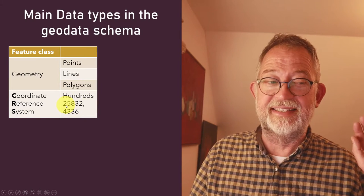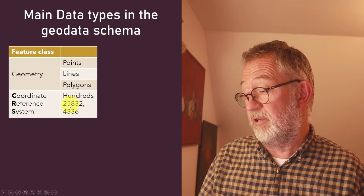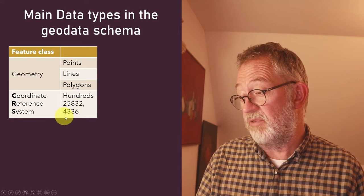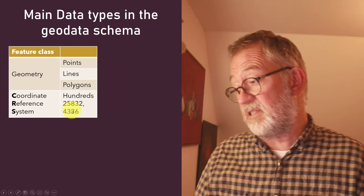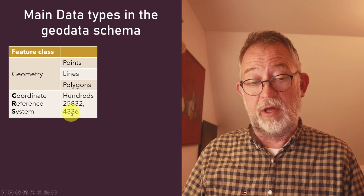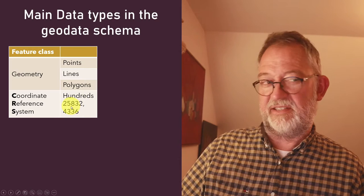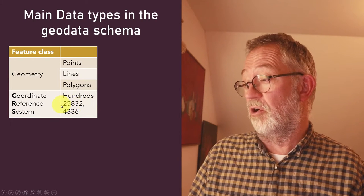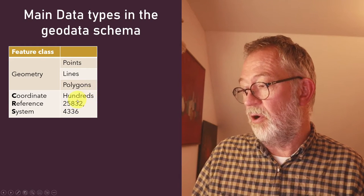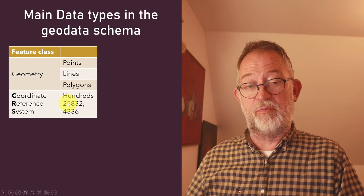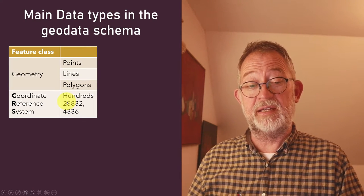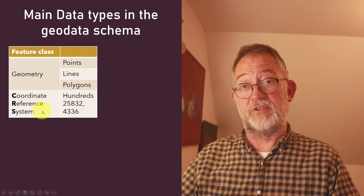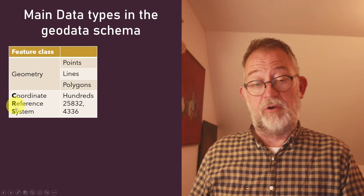There are literally hundreds of different coordinate reference systems. The two common ones in Denmark are 25832, which is the European datum with UTM zone 32, and 4326, which is the WGS — a global latitude-longitude representation. If you are in another country, 25832 would probably not be used and you would use something else as your local UTM. A feature class has additional properties: which type of geometry it uses — points, lines, or polygons — and how the coordinates reference locations on the earth, which is the coordinate reference system.